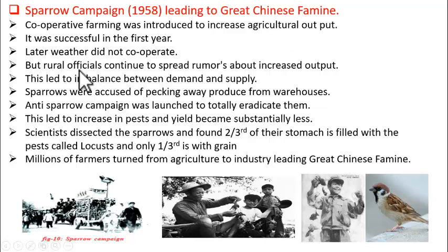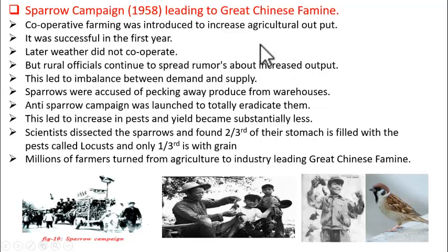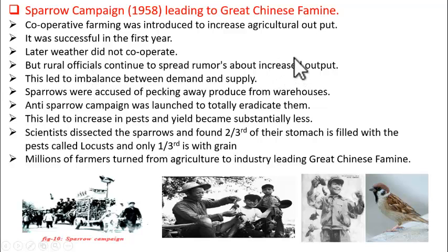In spite of all these situations, the rural agricultural officers continued to spread rumors about increased output. What they did is, the agricultural officers bluffed the government — they told the government that the output was still increasing.